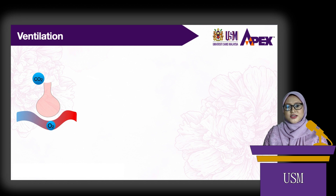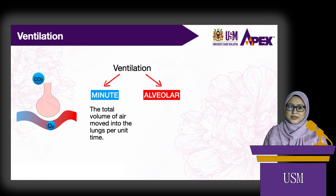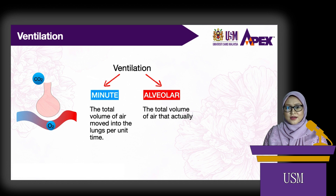There are two types of ventilation: minute and alveolar. Minute ventilation is the total volume of air moved into the lungs per unit time, whereas alveolar ventilation is the total volume of air that actually reaches the respiratory zone per unit time.